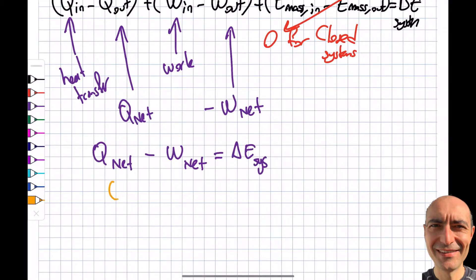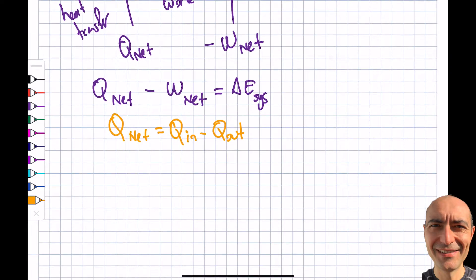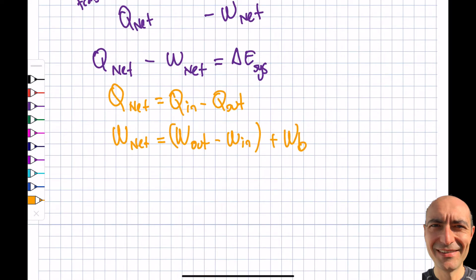So Q_net is Q_in minus Q_out. W_net equals W_out minus W_in. And now there's a new term that I discussed in detail: boundary work, when the boundary is moving. It is sometimes zero, sometimes non-zero. You have to analyze the case. This is the formula for it.